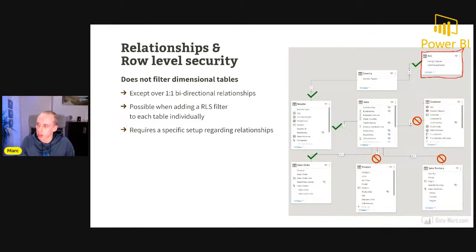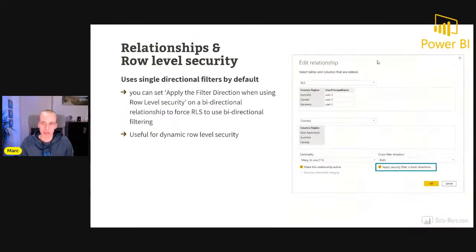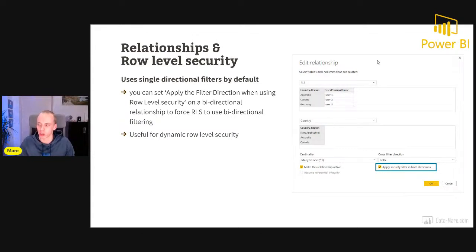Something important to keep in mind: a security filter will never cross a both-direction relationship unless we explicitly allow it. In the relationship settings, we can check a feature called 'Apply security filter in both directions.' By doing that, it will cross the bidirectional relationship — otherwise it will not. Let me show you this in the demo. We have a row-level security setup, and in the modeling section under Manage Roles, I've defined roles for different countries — for example, Canada filters where the RLS table equals Canada, and Australia equals Australia.